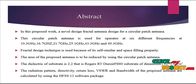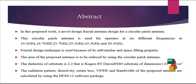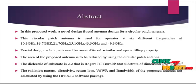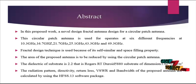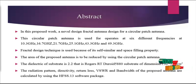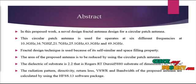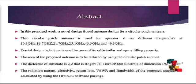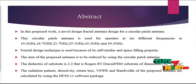Let us discuss about the abstract of the project. The microstrip antenna basically consists of a radiating patch on one side of a dielectric substrate which has a ground plane on the other side. The patch is generally made of conducting materials such as copper and gold, and the patch is very thin. The different radiating patches may be square, rectangular, thin strip, circular, elliptical, triangle, or any other configuration. The radiating elements and field lines are usually photo-etched on the dielectric substrate.